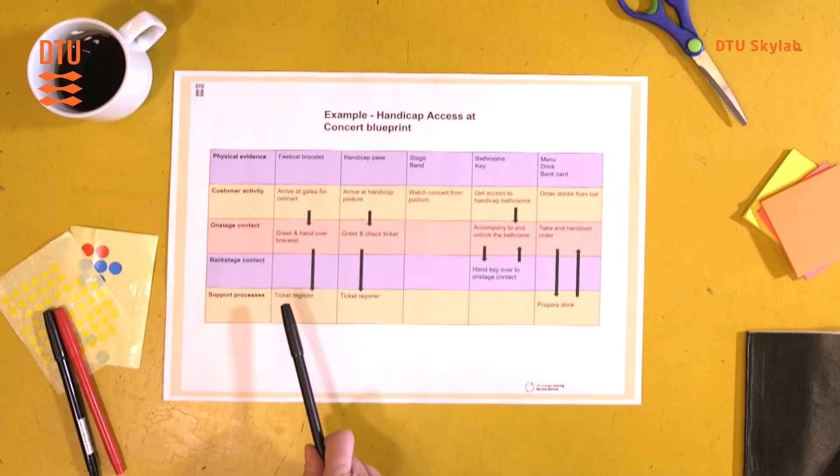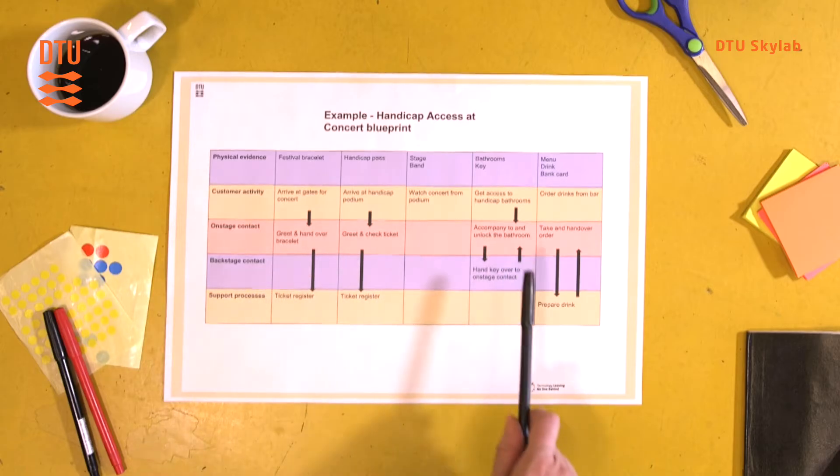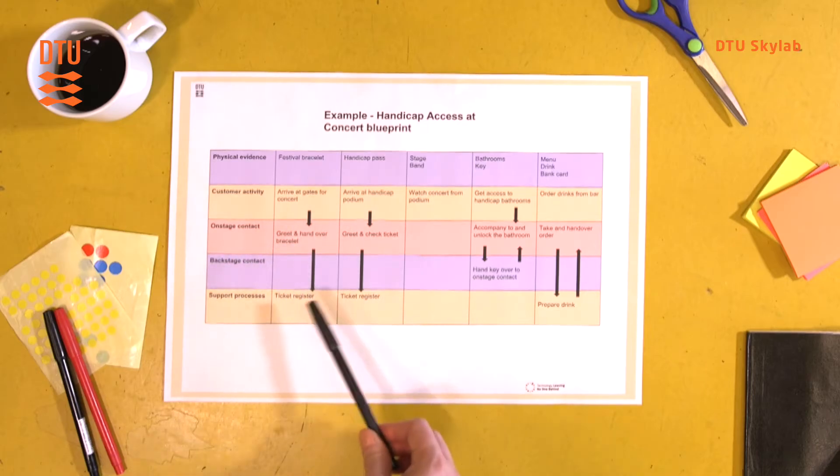And the service blueprint is really useful for many different purposes. You can use them for creating an overall understanding, either to display it to someone or for your own benefit. You can also use it to identify pain points or opportunity areas.